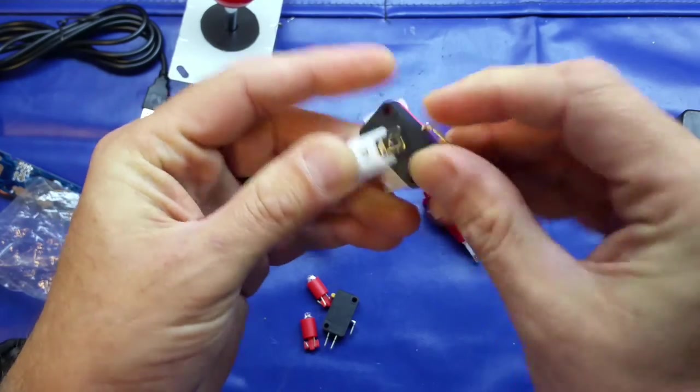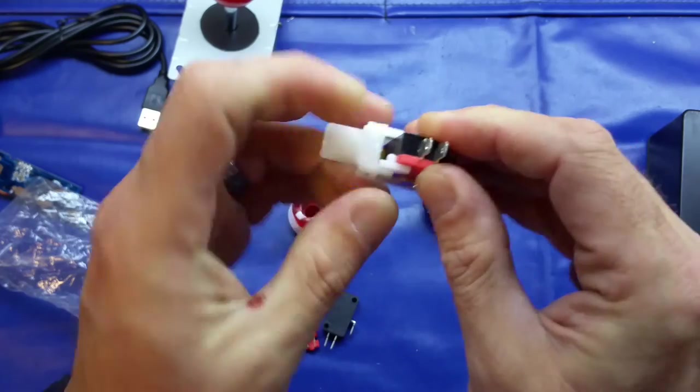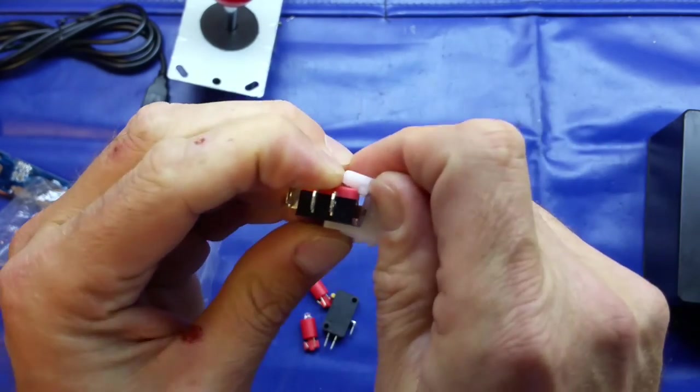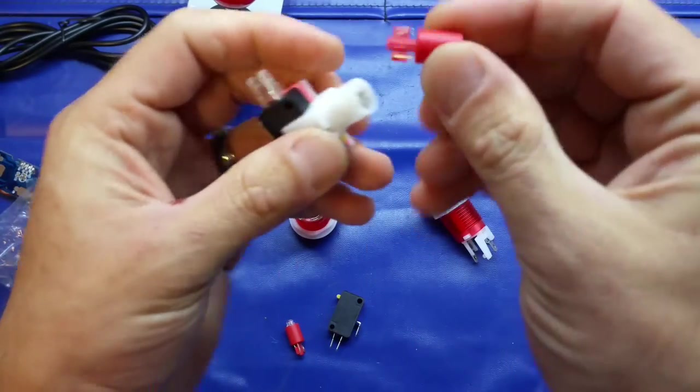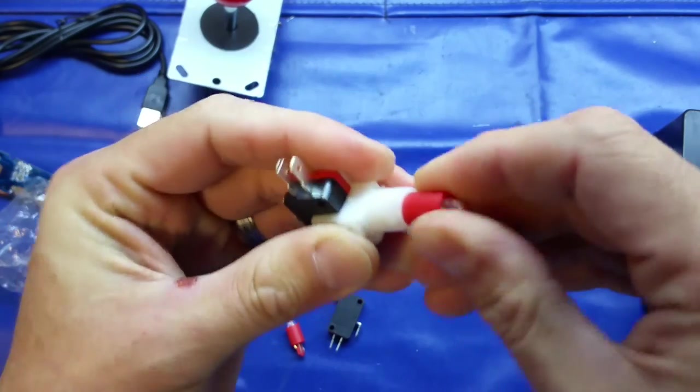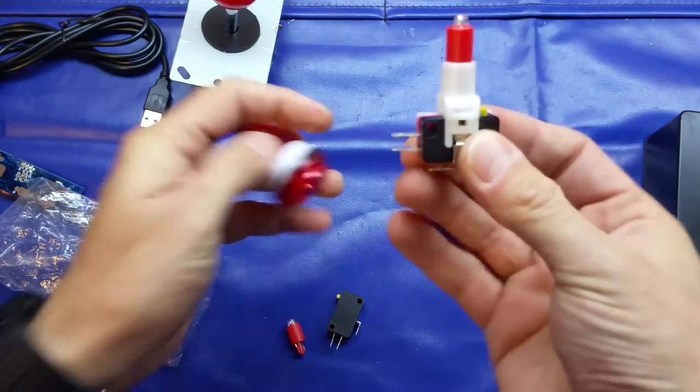The micro switch goes in like so and these are quite a tight fit, but you just pop them in. You can see the little pegs that go in and they bend really tight so there's no risk of these falling out once you've constructed it like so.